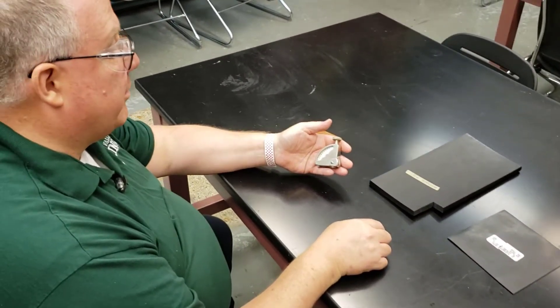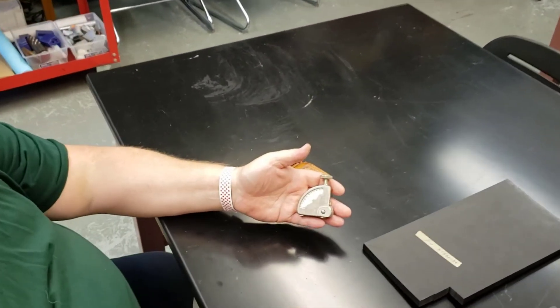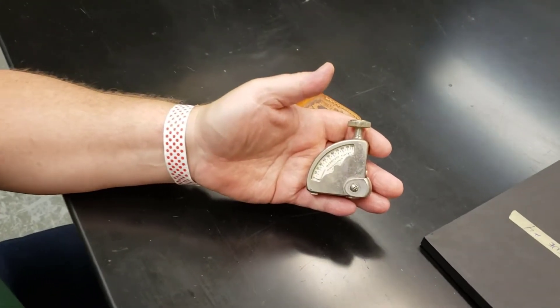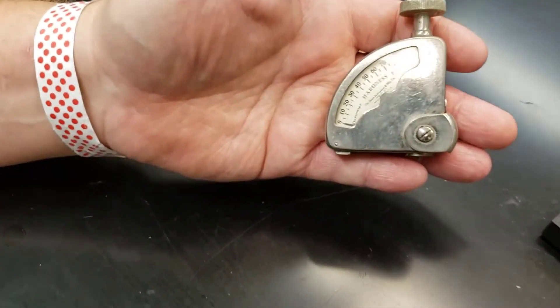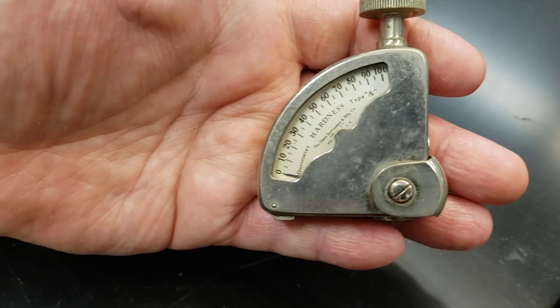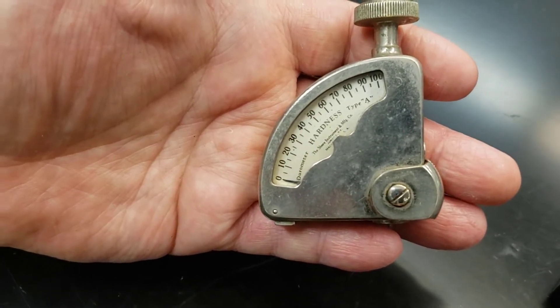This is a shore durometer type A tester. They go through D just so you know. This is used for doing polymers and it's a hand tester.